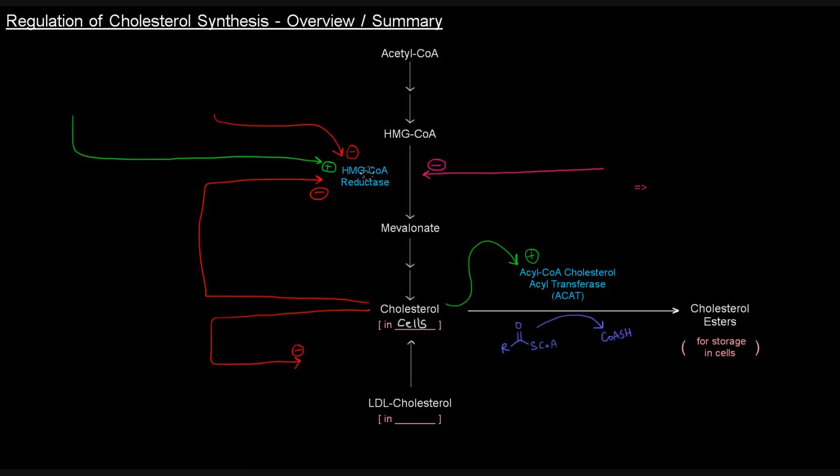We mentioned already that HMG-CoA reductase is the main control site or control point of this process. And it is activated by insulin, because it's anabolic, and it's inhibited by glucagon, anabolic versus catabolic hormones.